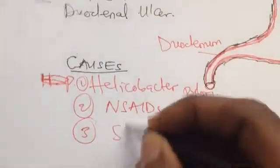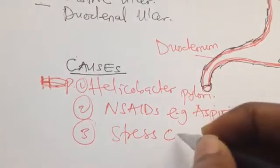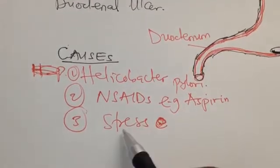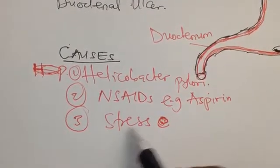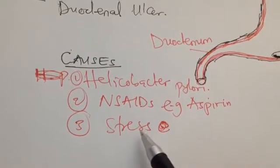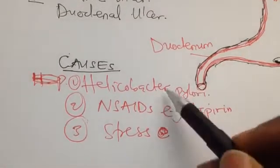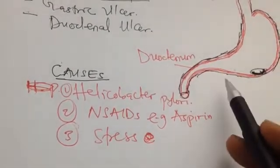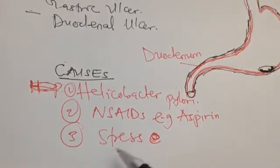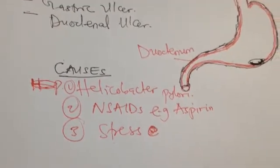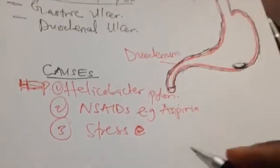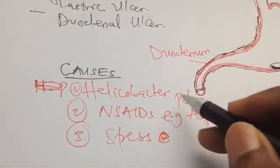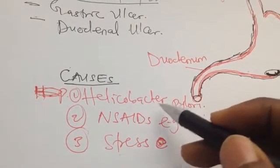The third cause is stress ulcer, also known as Curling's ulcer. Stress ulcer is mostly associated with duodenal ulcer, while Helicobacter pylori and NSAIDs are mostly associated with gastric ulcer. That said, stress ulcer can also occur in the stomach. H. pylori is the most common cause of gastric ulcer, so let us now look at how it causes ulceration.